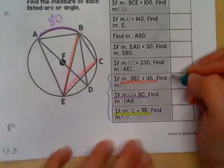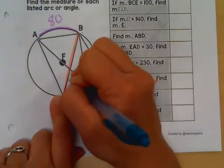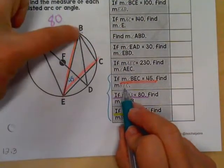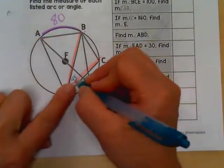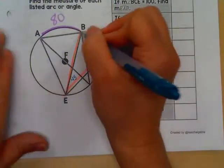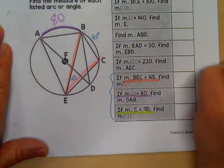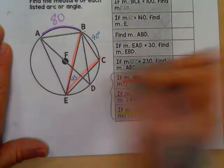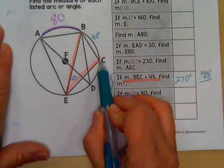Okay, for these last three, if BEC, that angle is 45, they want us to find the measure of BEC, that arc. Well, if this is 45, that means that arc that goes with it is 90. I want the rest of the circle. So if I took 360 minus 90, that leaves the rest of the circle that I'm looking for from B around to E and stopping at C to B to 70.